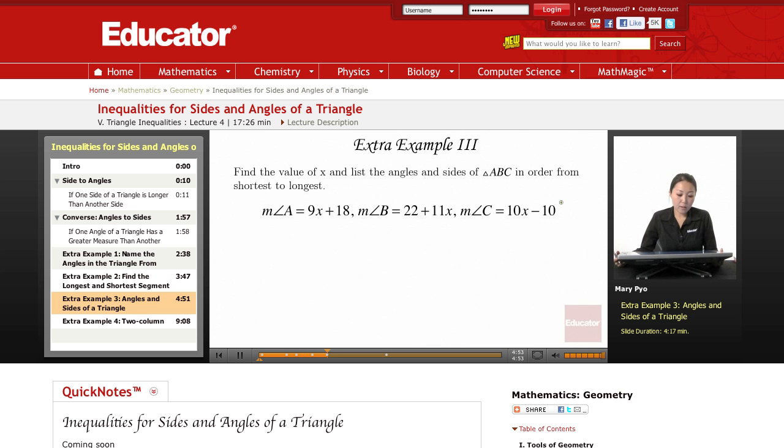Example 3: Find the value of x and list the angles and the sides of triangle ABC in order from shortest to longest.